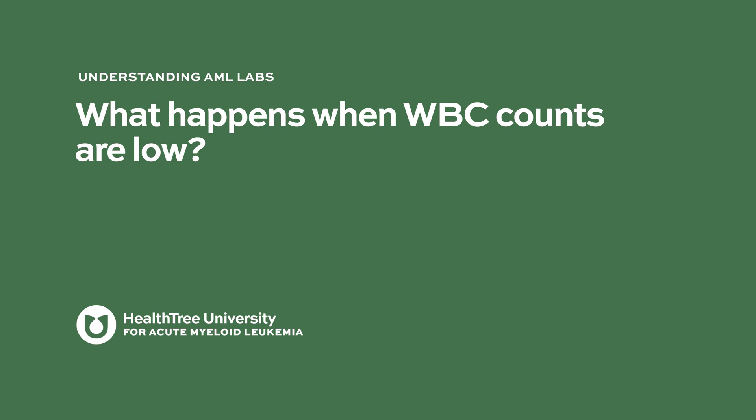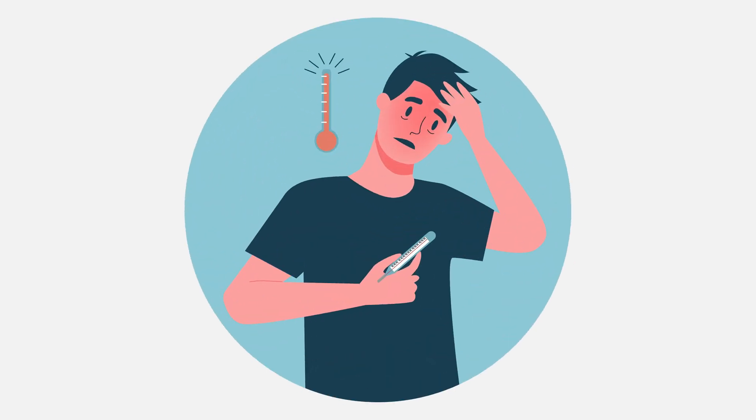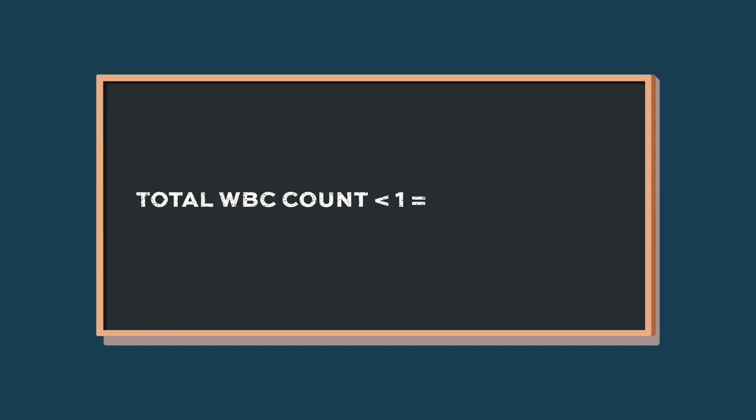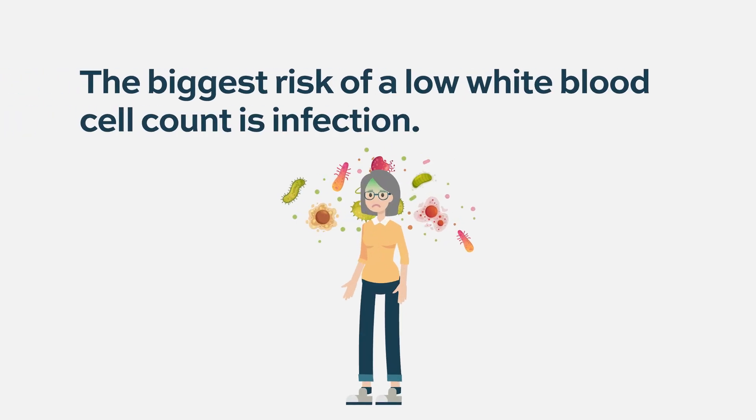What happens when white blood cell counts are low? If your white blood cell count is low you may have no symptoms, or you may have very severe symptoms — the range is pretty broad. Really, when your white blood cell count is low you're at risk for infections. If your total white blood cell count is less than one, you don't even have to worry about calculating an absolute neutrophil count because you know you're neutropenic. Sometimes patients say they feel fatigued. Really the biggest risk is overwhelming infection. Sometimes we use prophylactic or preventive antibiotics to prevent patients from getting an overwhelming bacterial infection.